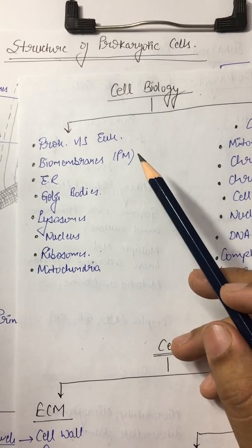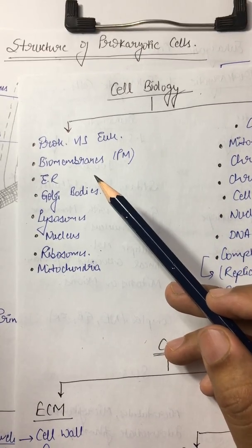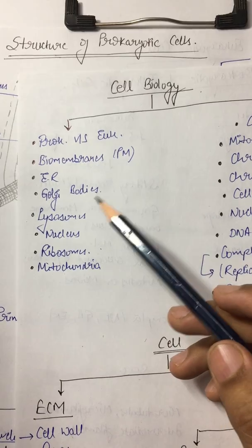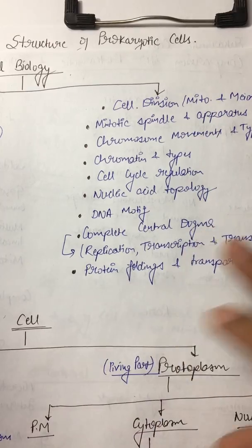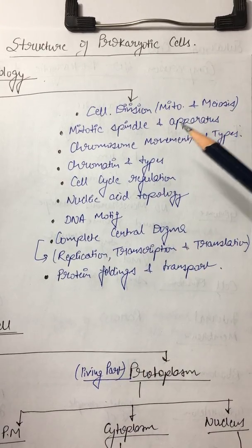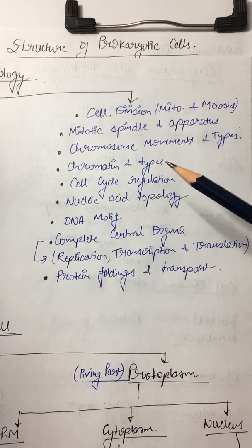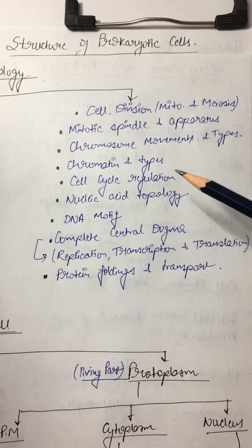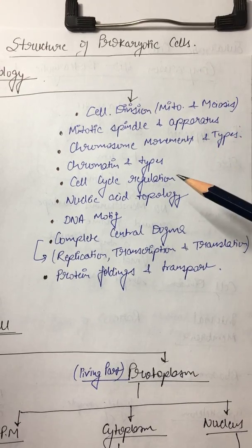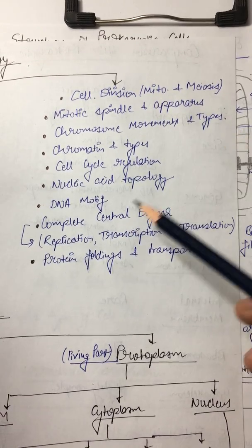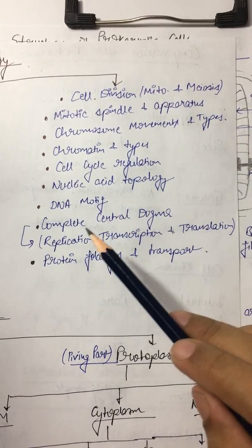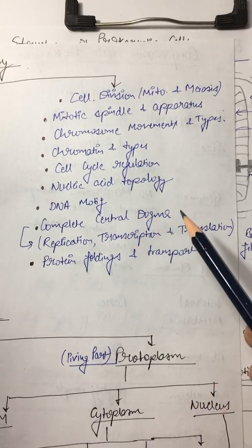We'll cover biomembranes, endoplasmic reticulum, Golgi body, lysosome, nucleus, ribosome, mitochondria organelles, then cell division, mitosis, meiosis, mitotic spindle apparatus, chromosome movement types, chromatin types, then nucleic acid topology, DNA motif, central dogma which comprises replication, transcription, and translation.